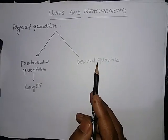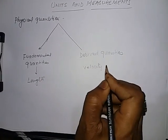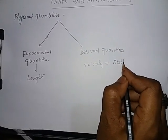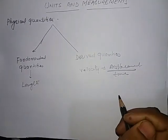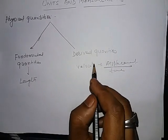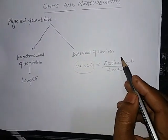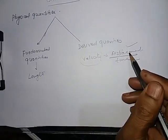If you want to measure velocity, velocity is displacement upon time. To measure velocity, you have to measure displacement and time. This means that velocity depends on displacement and time.